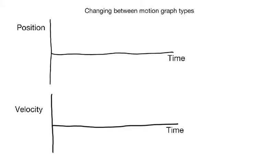Watching this video is not the best way to learn this material initially, but it works well for a review. Initially you probably want to be playing with some kind of a motion detector system so that you can directly see what the object is doing and what the corresponding graph looks like. The trick with going between these two graphs is that there's a step in between: visualizing what the object would be doing. In a calculus class you might work on problems analytically, but this is a physics class, so we might as well be able to picture these things.